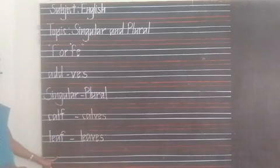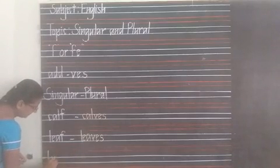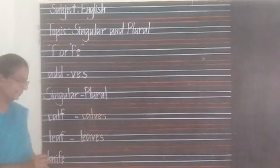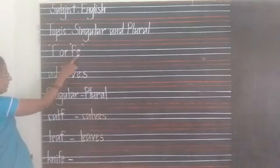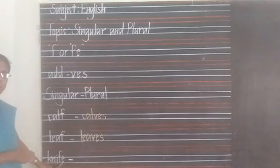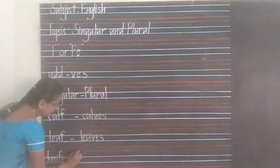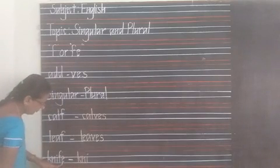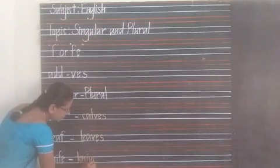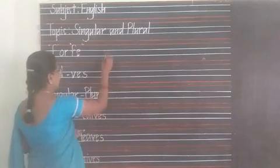Next example: K-N-I-F-E, knife. The ending letters are FE. You remove the FE and add VES — K-N-I-V-E-S, knives. Knife is singular; knives is the plural form.